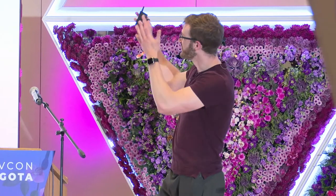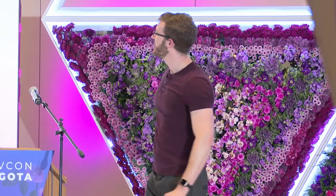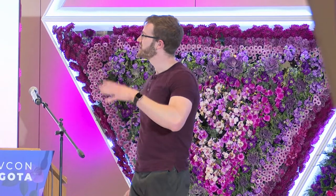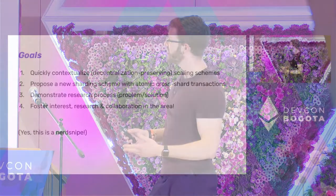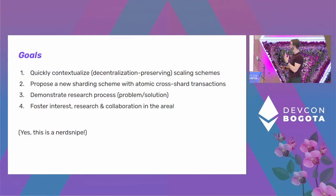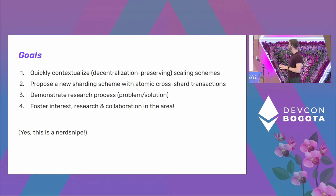In this talk, I want to contextualize vertical and horizontal scaling. I want to show you a cool new idea I have for a sharding scheme which has atomic cross-shard transactions. And we're going to explain exactly what that means.